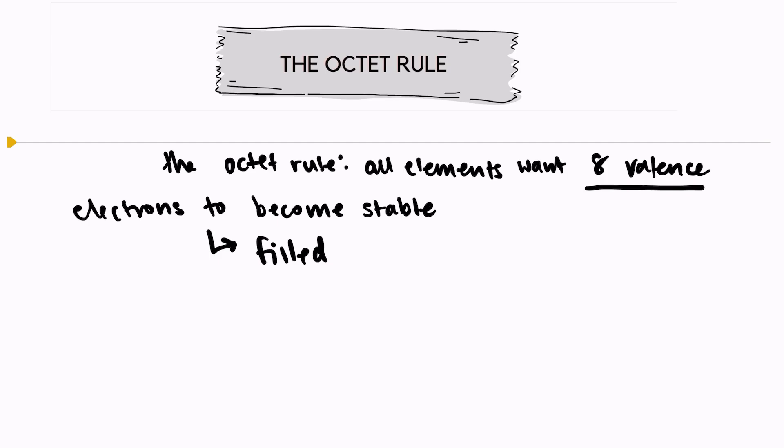There are a few elements on the periodic table that have already satisfied this rule and are already stable, and those are the noble gases. The noble gases already have eight valence electrons. They're already stable, which explains why noble gases very rarely react. They're relatively unreactive because they're already stable. They already have all of the valence electrons that they need.